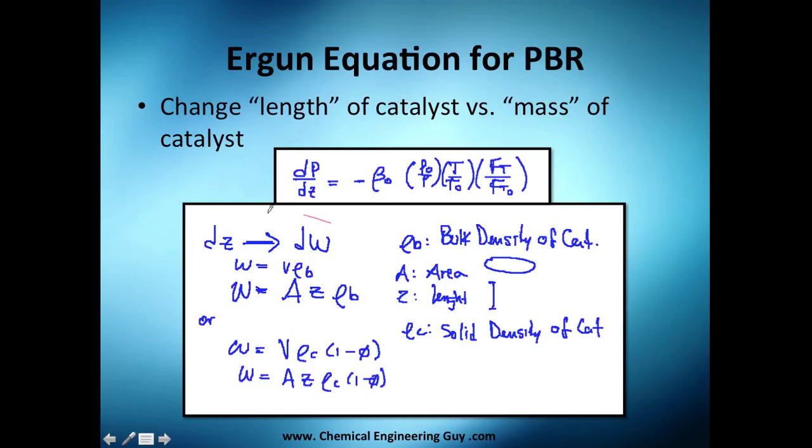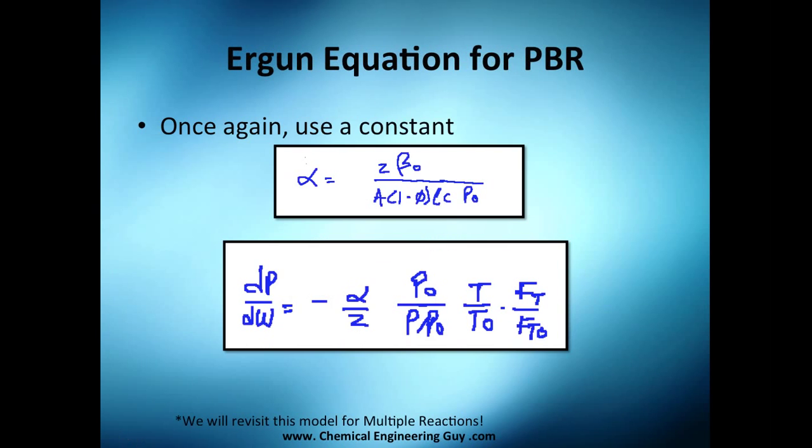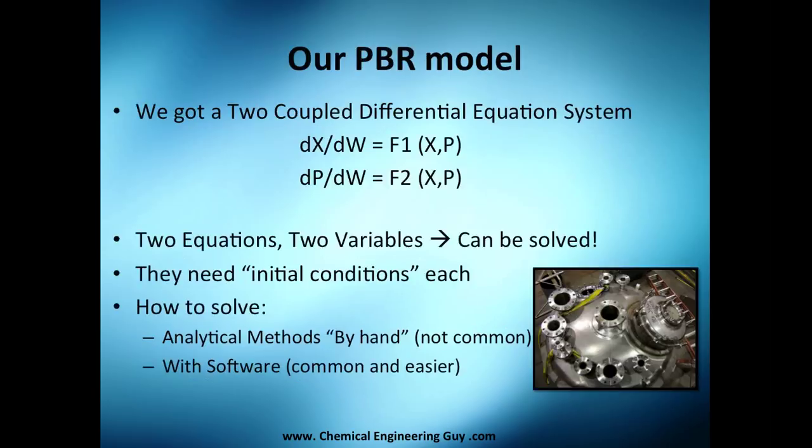So essentially, we are using this once again to get a relationship between the differential of length of the bed and the differential of mass of the bed. And how do we do this is by density. So hopefully you get the idea. And once again, keep with your Ergun equation until we get to the final equation. And this is what we're going to see in the next video, how we're going to have our final model and how to solve it. So see you in the next video.